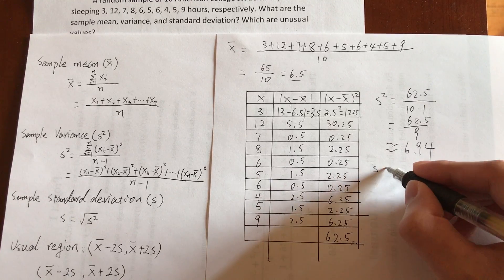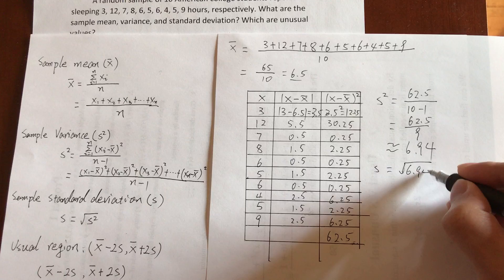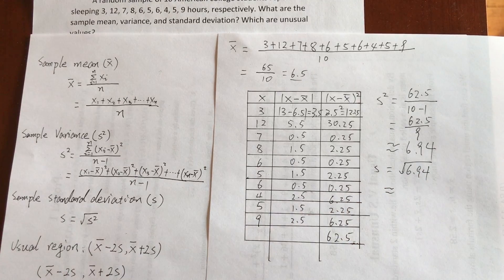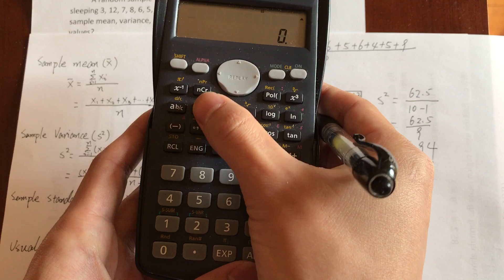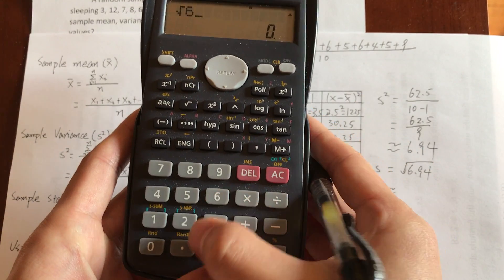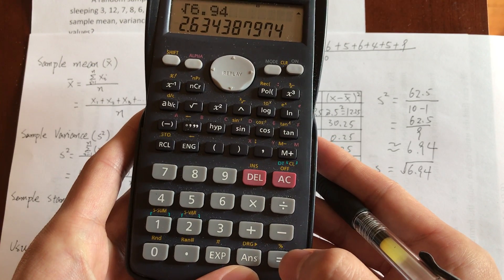Standard deviation is equal to square root of this number. It's approximately 2.63.